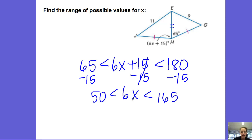And so now I can solve for x by dividing everything by 6. 50 divided by 6 is 8.33, and 165 divided by 6 is 27.5. So x needs to be somewhere in between 8.33 and 27.5.